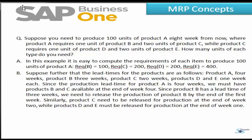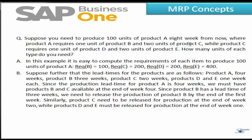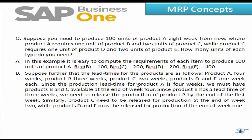Let us understand the concepts with a few questions. Suppose we need to produce 100 units of product A eight weeks from now. Product A requires one unit of product B and two units of product C, while product C requires one unit of D and two units of E. In this example, to produce 100 units of product A we require 100 units of B, 200 units of C, 200 units of D, and 400 units of E.